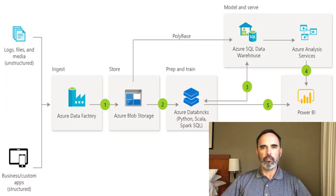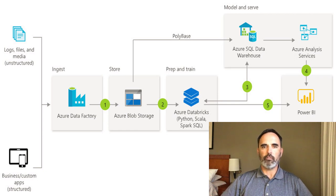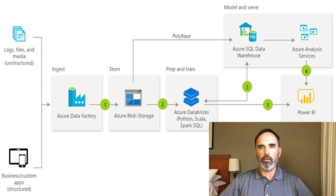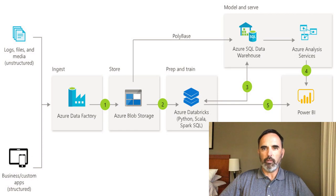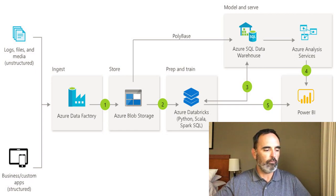The diagram shows a pretty typical pattern, and we've implemented patterns such as this. One thing that caught my eye is that the diagram suggests loading data from your source system into Azure Blob Storage. Recently I've been working on a couple of projects where we are using Data Lake Store instead of Blob Storage, and it got me thinking: what are the reasons I would use Blob Storage or Data Lake, and how do I know how to choose one over the other?